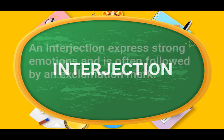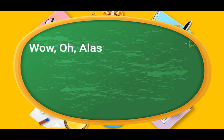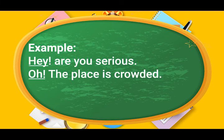Interjection. An interjection expresses strong emotions and is often followed by an exclamation mark. For example: Wow, Ho, Alas. Examples: Hey! Are you serious? Ho! The place is crowded. The interjections in the above sentences are 'hey' and 'ho'.